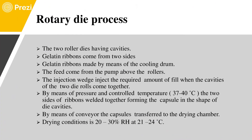The two die rollers have cavities; gelatin ribbons come from both sides, made by means of a cooling drum. The feed comes from a pump above the rollers and is automatically fed between them by gravity. An injection wedge injects the required amount of fill when the cavities of the two dies come together. By controlling the pressure and temperature, the two sides of the ribbons weld together and form the capsule in the shape of the die cavities. The capsules are then transferred to the drying chamber by conveyor.